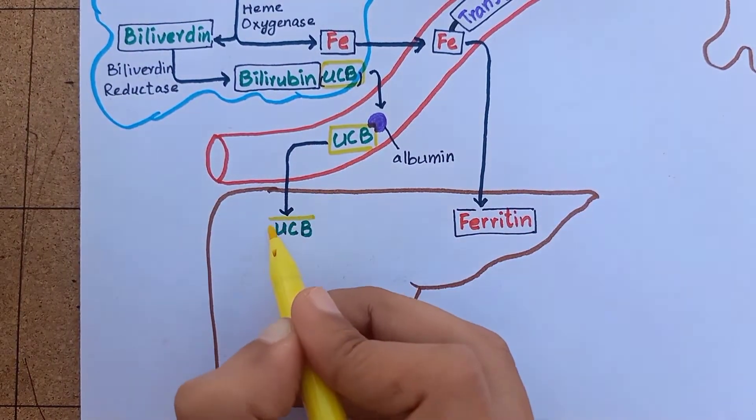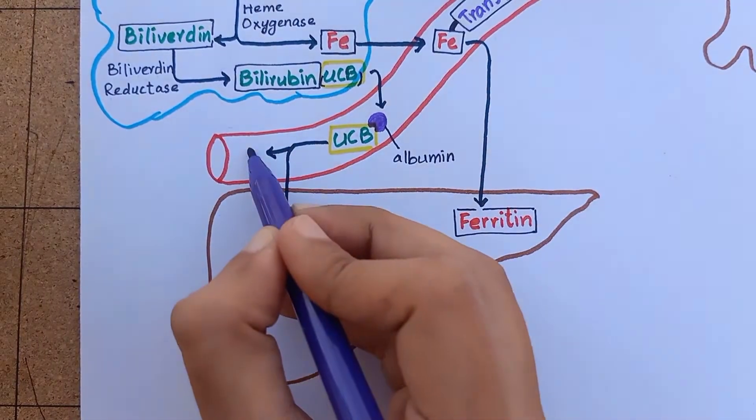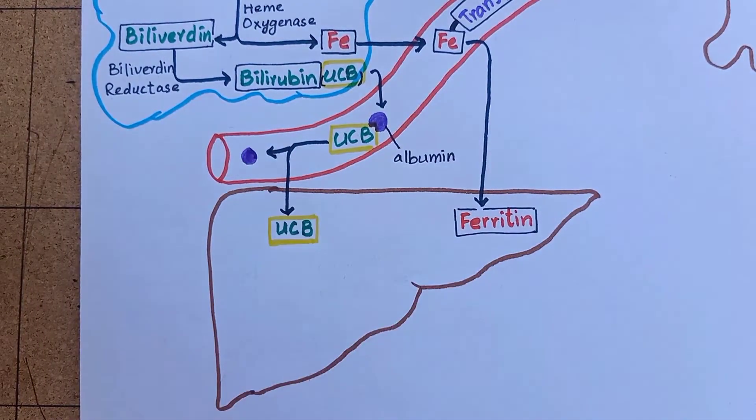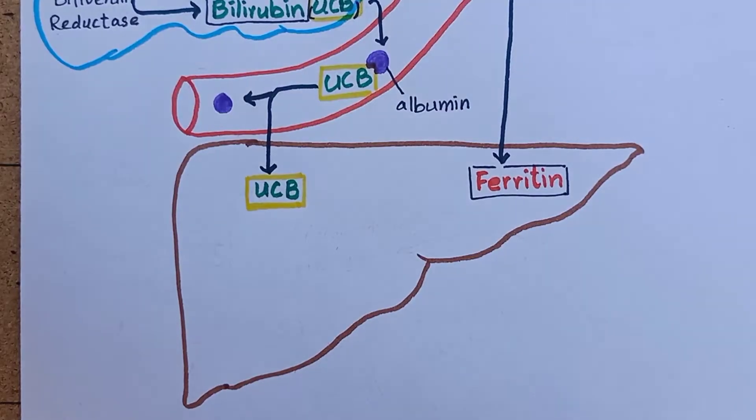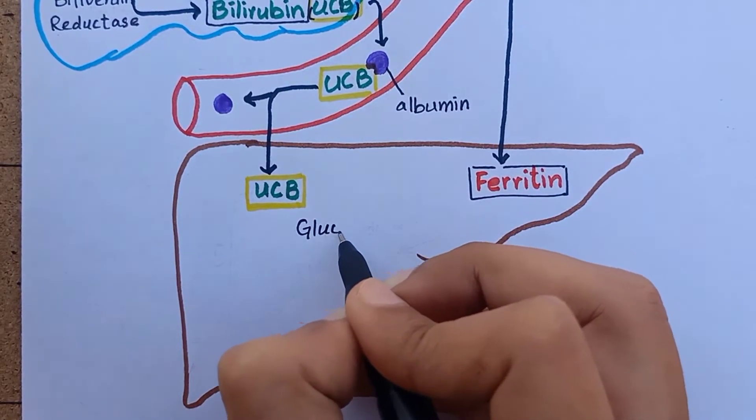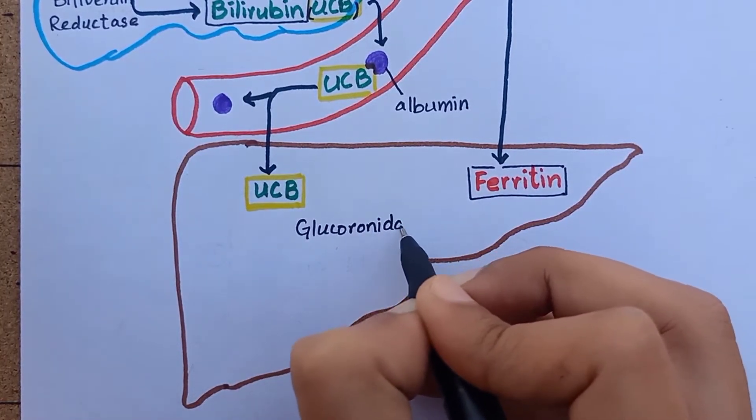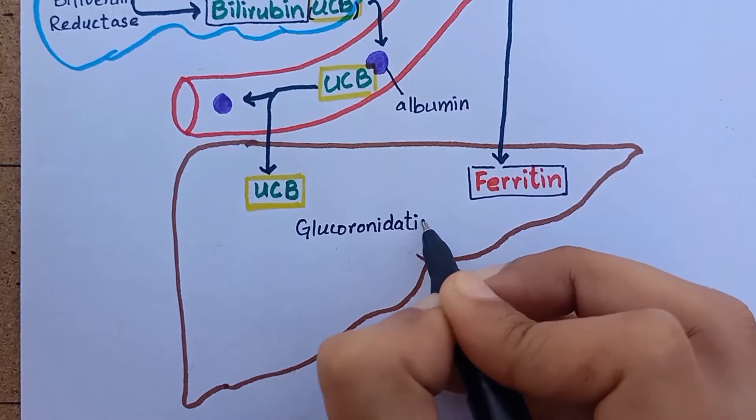The unconjugated bilirubin is absorbed in hepatocytes by facilitated diffusion while albumin remains in circulation. Inside the hepatocytes bilirubin undergoes glucuronidation. This process makes bilirubin more water-soluble which allows it to be excreted out of the body efficiently.